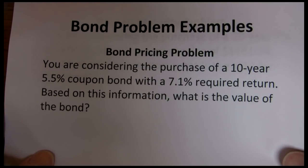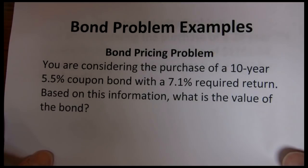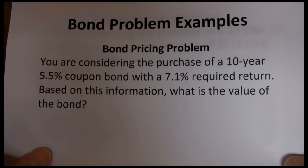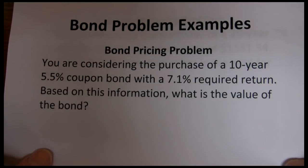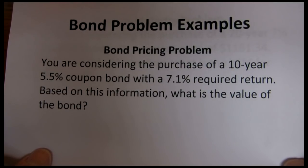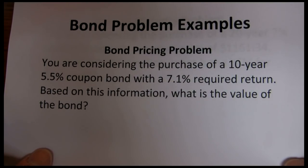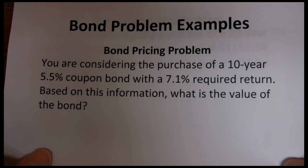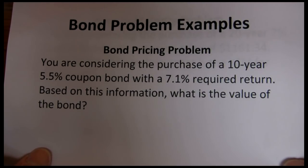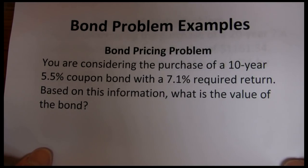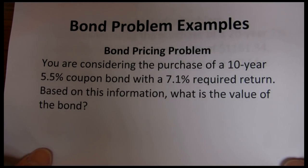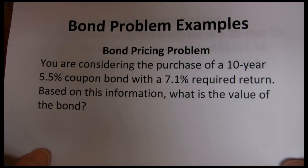Now in real world situations with bond pricing, probably the biggest challenge of those steps is B, choosing the appropriate discount rate. In order to determine the appropriate discount rate, you need to consider how risky the bond is, expected inflation, what other interest rates are at the current point in time. Lots of different factors go into determining the appropriate required return. We're going to talk about some of those things in chapter 3 when we look at the financial system and interest rates. But really in order to get good at determining an appropriate required return, you need to develop a lot more knowledge of finance beyond this business finance course.